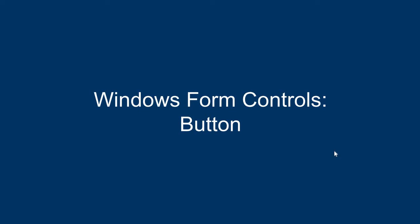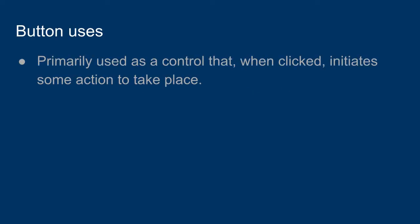In this video, we will look at the button control for Windows Form applications. The primary use of a button is to generate an event. So when you click on a button, an event occurs, and that's really what buttons are used for. Buttons are a good control when you want to have something that will initiate work to be done in your application.